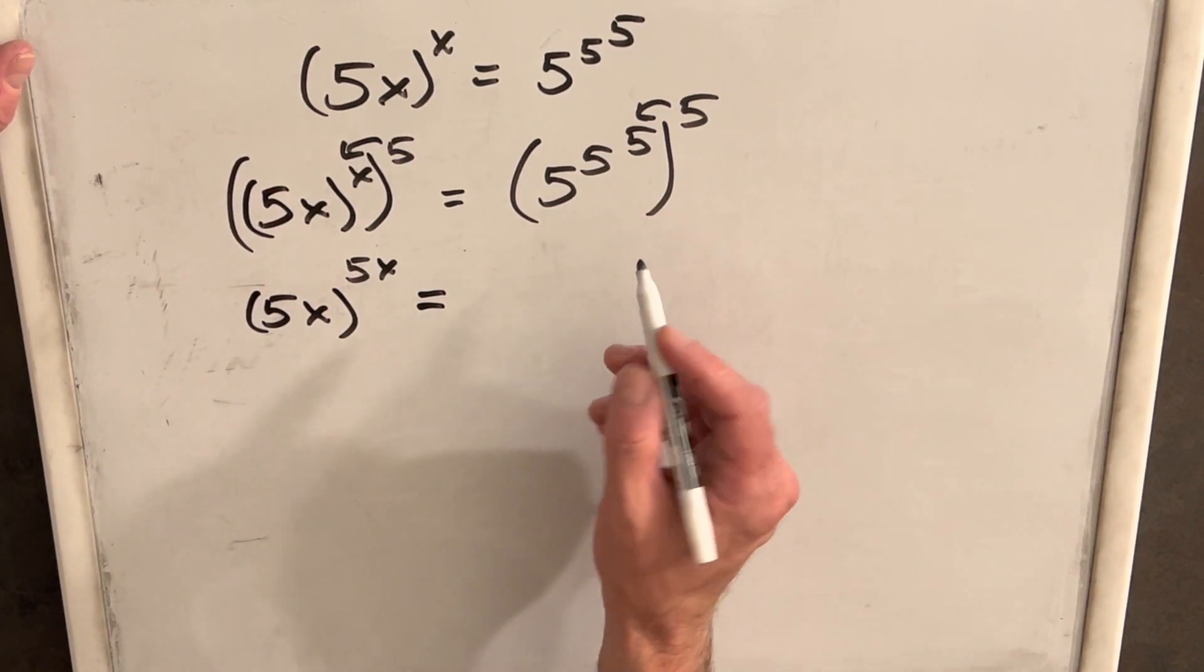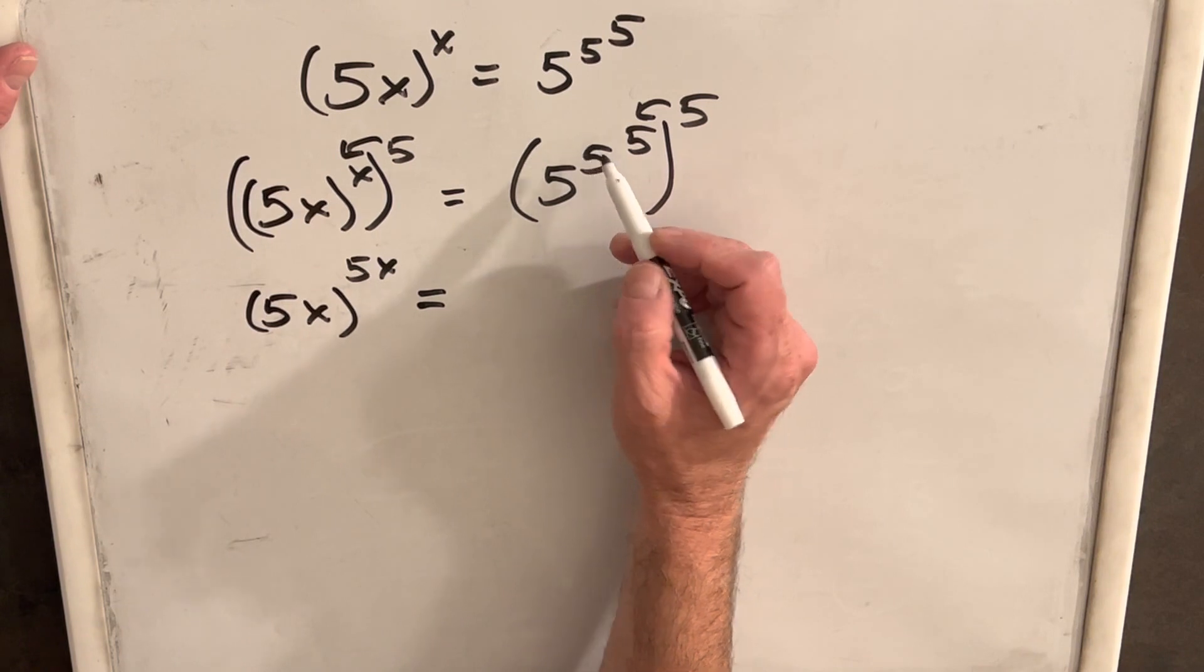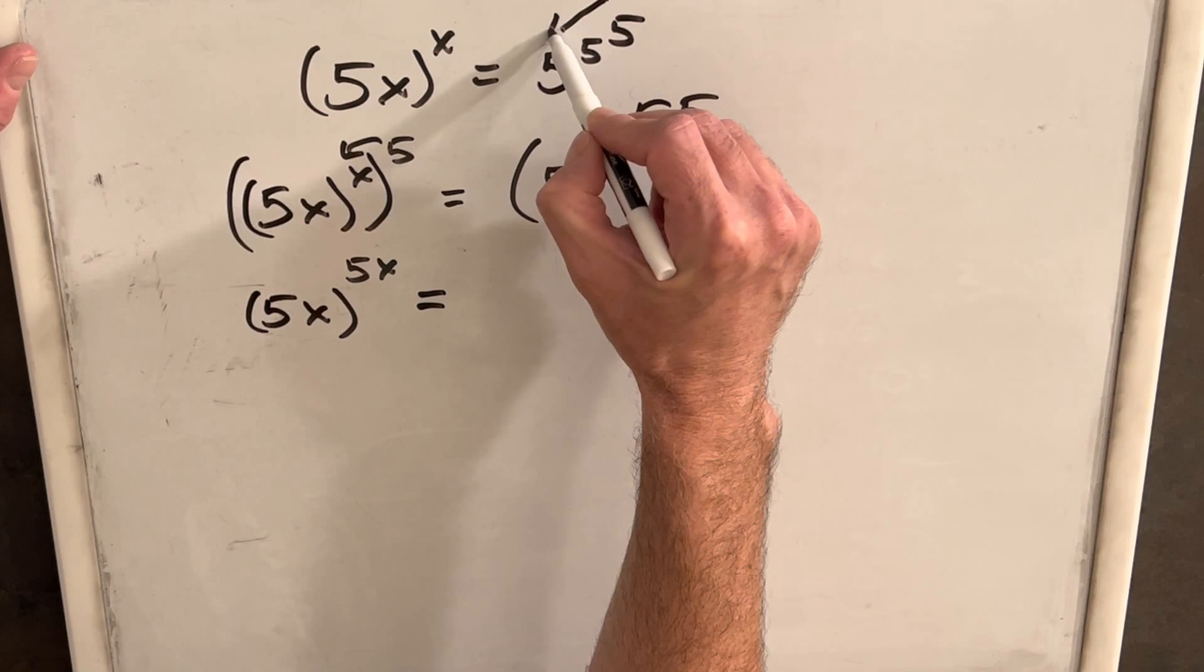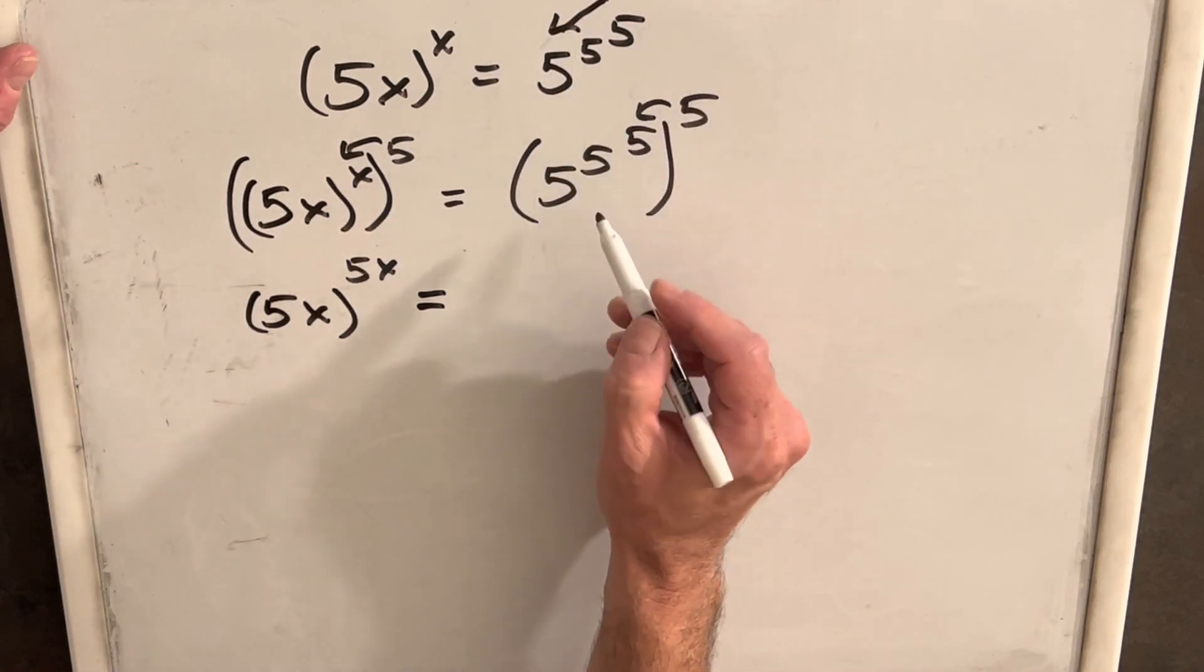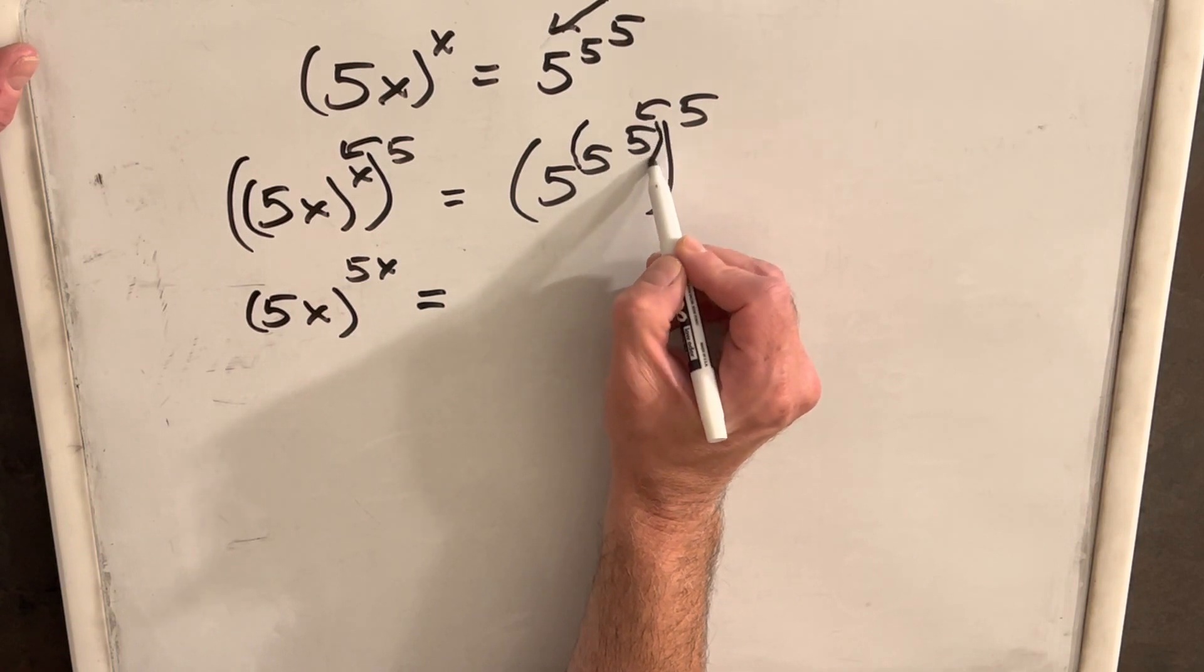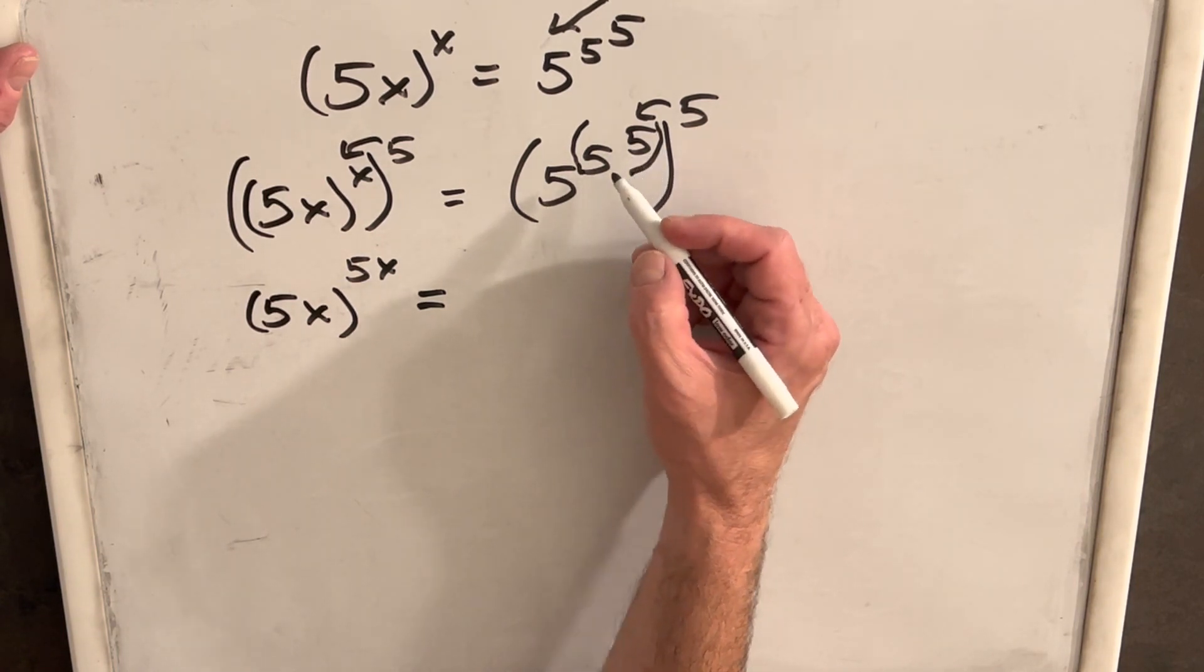Now this one, I think you have to be even more careful because in an exponent tower, you calculate from top to bottom. So it's actually calculated this way, not from the bottom, which means there's an implied parenthesis right here, which makes a big difference.